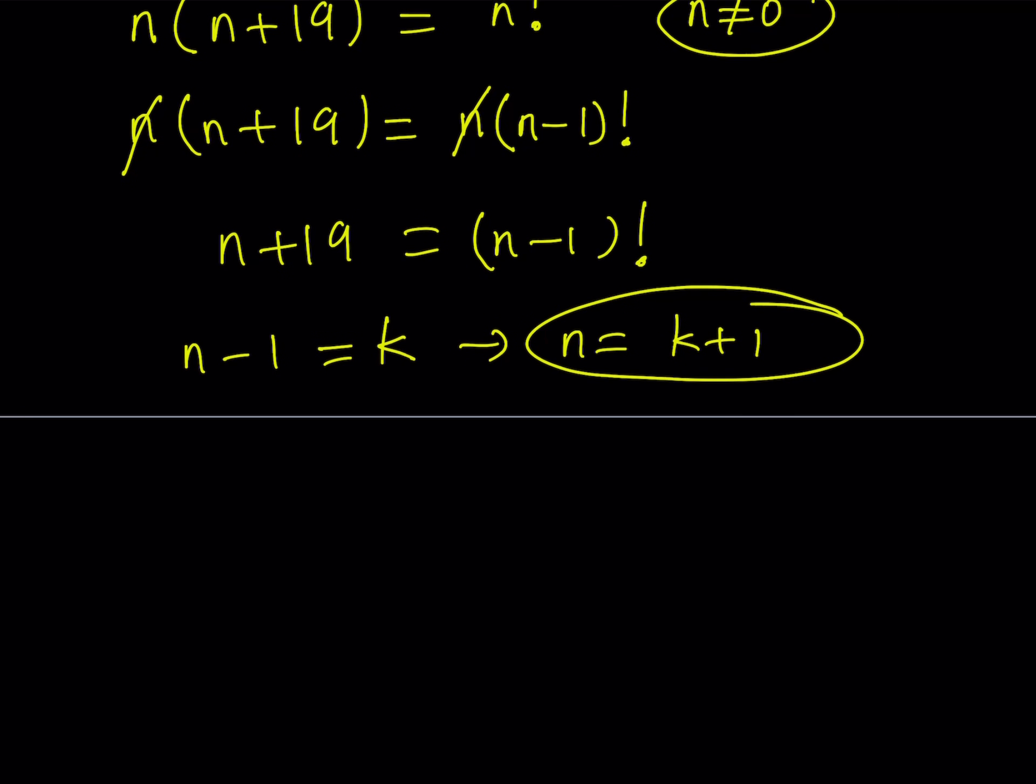If you do that on both sides, we get the following, which is an equivalent equation. Solving for k is going to give you the value of n because they're connected. If you replace n with k plus 1 here, we get k plus 20 equals k factorial.